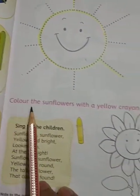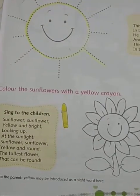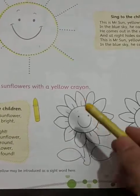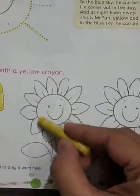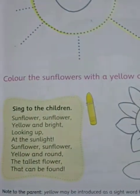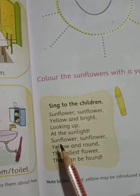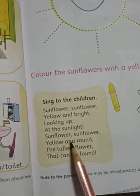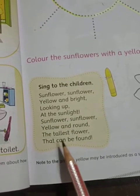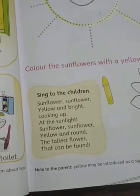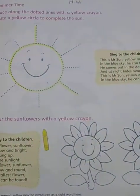Here is another activity: color the sunflower with a yellow crayon. Take the yellow crayon and color the sunflower. Note that the center face of the sunflower is brown, so you can color that part brown and the petals yellow. There is also a rhyme: 'Sunflower, sunflower, yellow and bright, looking up at the sunlight. Sunflower, sunflower, yellow and brown, the tallest flower that can be found.' This is all about yellow color.